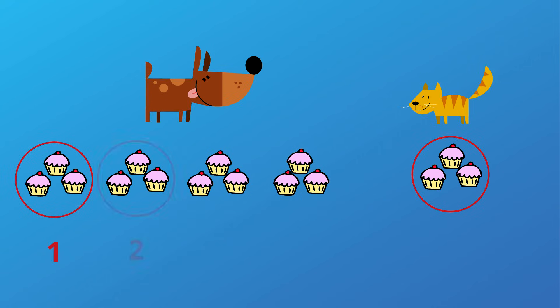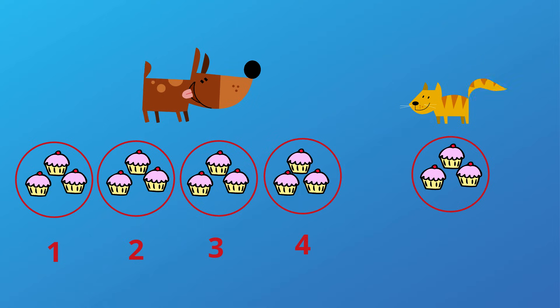One group of three, two groups of three, three groups of three, four groups of three. Look, Rufus had four times as many treats as Ginger because he had four groups of three.